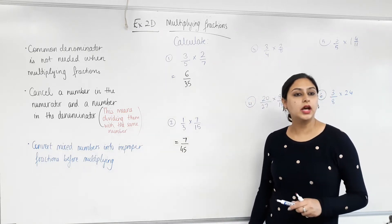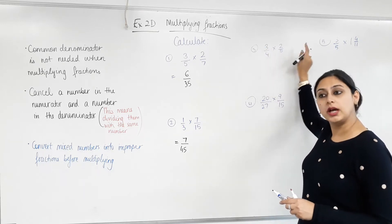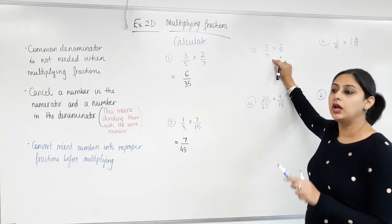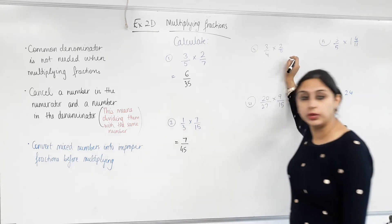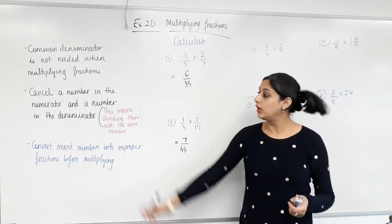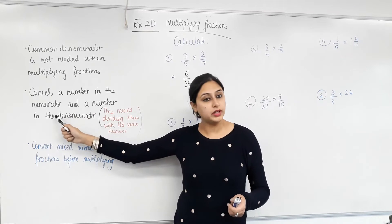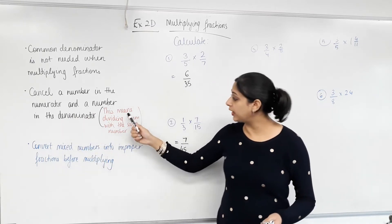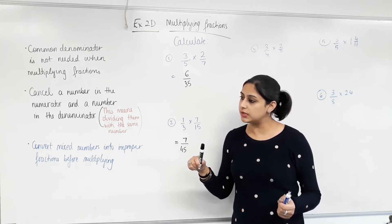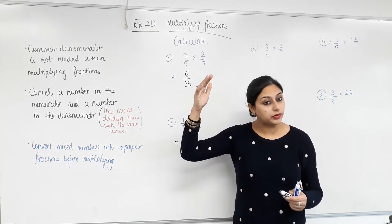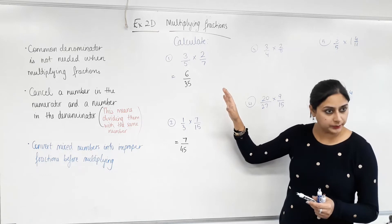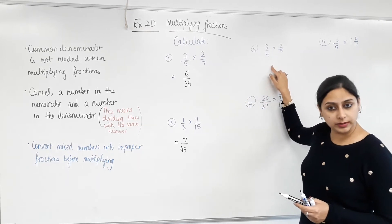The next one is a little bit different: three quarters times two fifths. Do two and four have a factor in common — are they both divisible by a common number? Yes. What is that number? Two. Can I divide both two and four by two? That is also called cancelling out. What it means is you divide the numerator and the denominator by the same number — we did this when finding equivalent fractions. You can only cancel something in the numerator with something in the denominator.